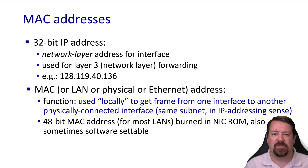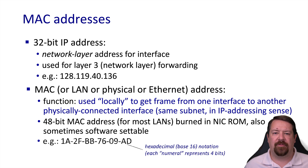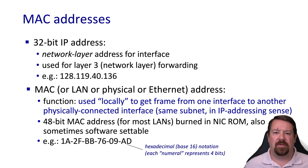Almost all layer 2 technologies use a 48-bit MAC address. These addresses are embedded in the network interface card, and there may or may not be some way to change them via software. If we need to write out a MAC address, we do it in pairs of hexadecimal digits with hyphens or colons between the pairs. One digit in hex represents 4 bits in binary, so these 12 characters represent the 48 bits of the MAC address.